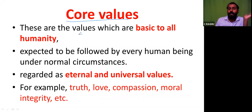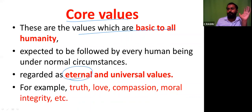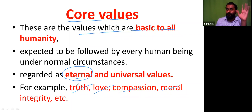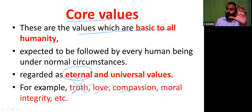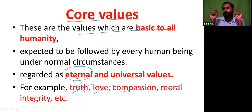Core values are basic to the whole of humanity — expected to be followed by every human being under normal circumstances. They are also known as eternal values which never die, and are universal. Examples: truth, love, compassion, moral integrity. Is there any society which says truth is not desirable? Even the most corrupt person has great respect for a truthful person. Why? Because these are universal values.